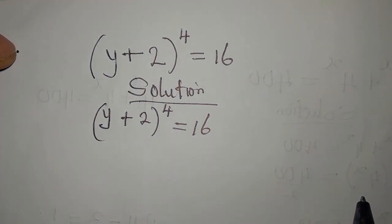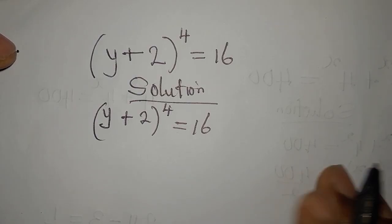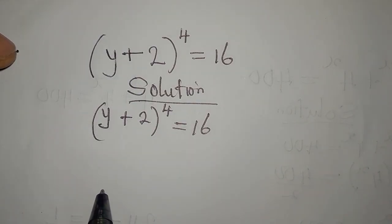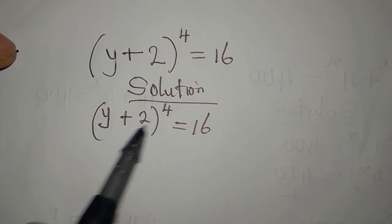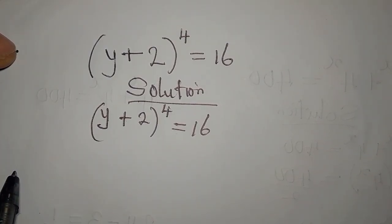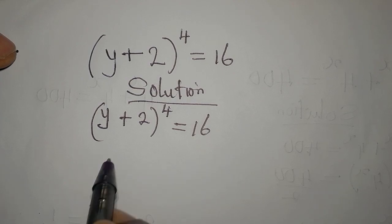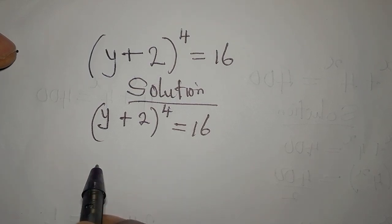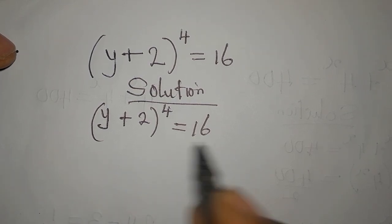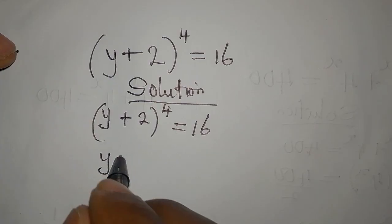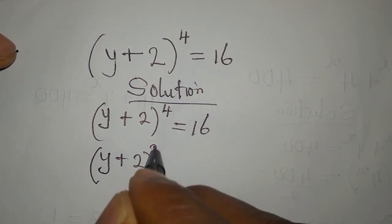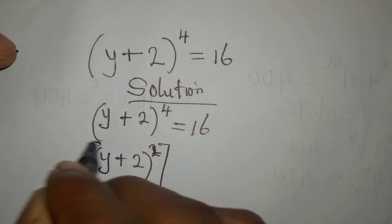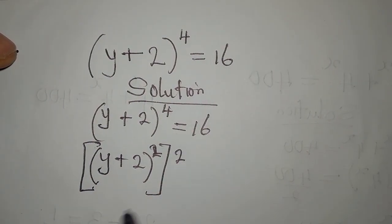We're going to provide the complete solution to this problem. Now before we do that, we don't have to expand this to the power of 4, because the expansion is going to be a lot. So let's rewrite it as (y + 2) to the power of 2, then to the power of 2.